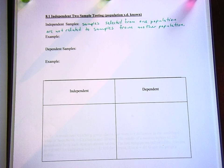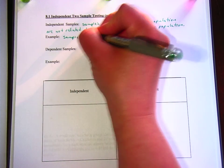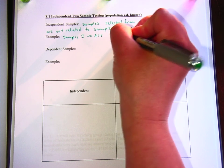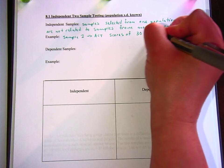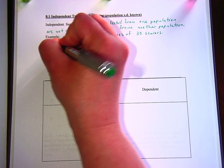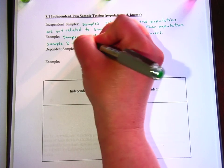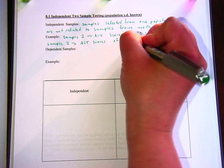So an example of that would be like sample one could be the ACT scores of 30 seniors. And sample two could be the ACT scores of 45 juniors.